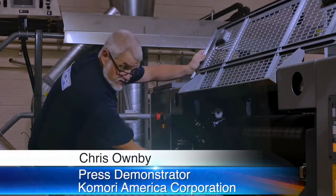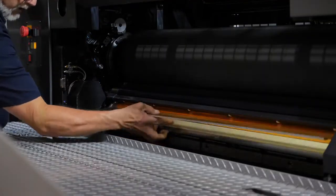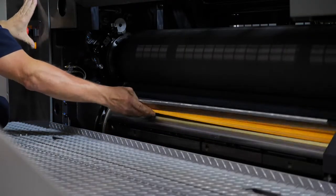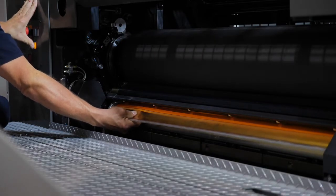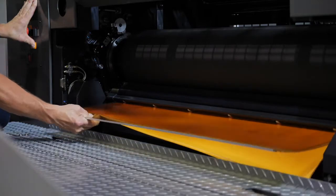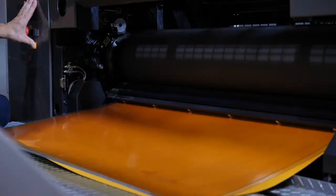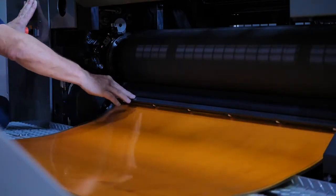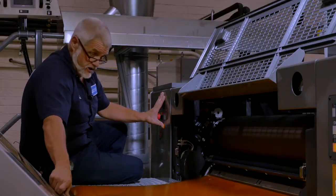As Doug mentioned, the press has automatically positioned itself for me to remove the blanket from the tail clamp. Once I remove the tail of the blanket from the clamp, I actuate the button here and the press will automatically move to the next position. I also want to mention that as I'm guiding this blanket out of the press, this pressure roller is engaged, which helps guide the blanket safely out of the press.